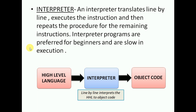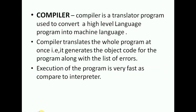The interpreter takes the high level language, interprets it line by line, and gives the object code. A compiler, on the other hand, is a translator program used to convert the entire high level language program into machine language at once. The purpose is the same as an interpreter, but the working criteria is different.